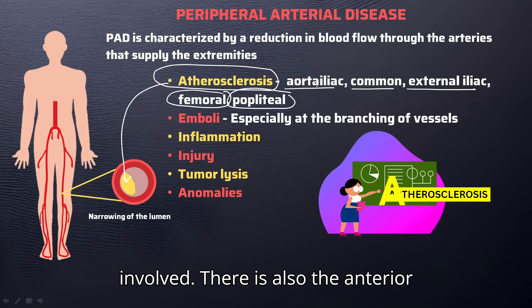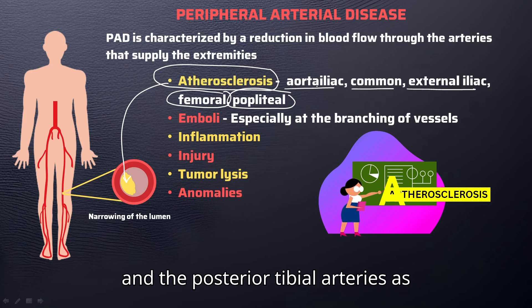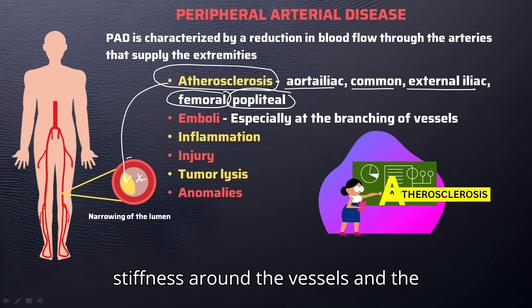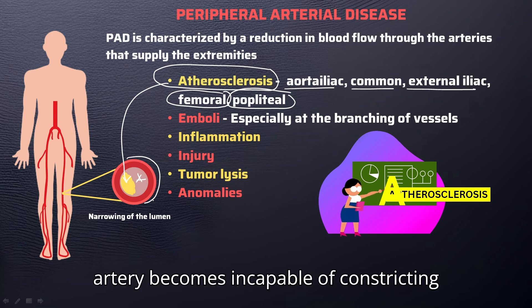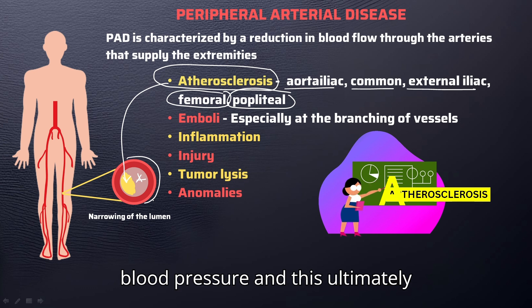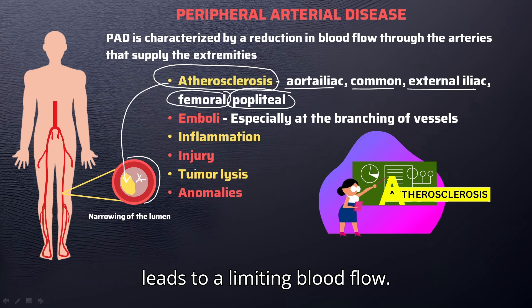There is also the anterior and the posterior tibial arteries as well. Eventually this leads to narrowing of the vessel and stiffness around the vessels, and the artery becomes incapable of constricting and dilating to regulate blood pressure, which ultimately leads to limiting blood flow.